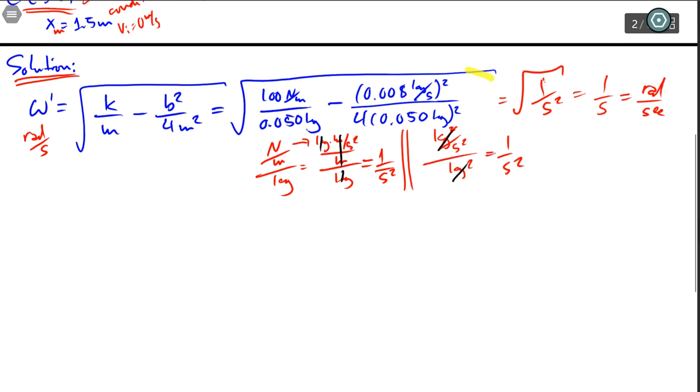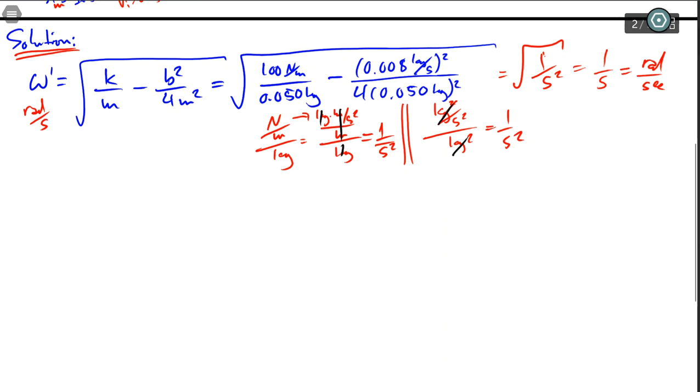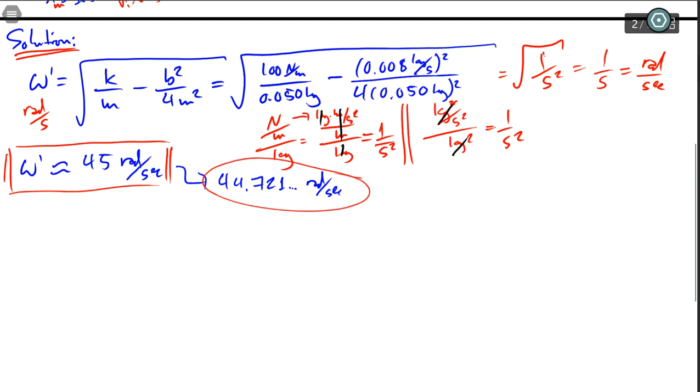If you plug all of this in your calculator, I recommend that you do not round it off, even though it approximately equals 45 radians per second. And that is actually our final answer. You need to store this answer in your calculator for the next problem. It actually turns out to be 44.721 dot dot dot radians per second. So this is the value you want to save in your calculator, but all of it, including the dot dot dot. So that is A, or the first one.